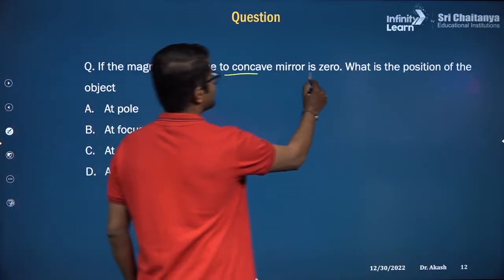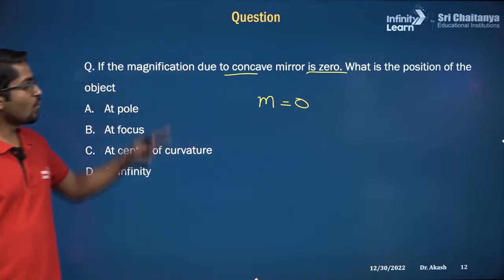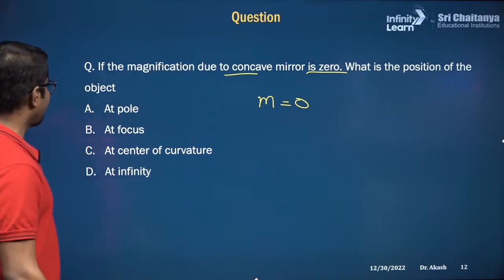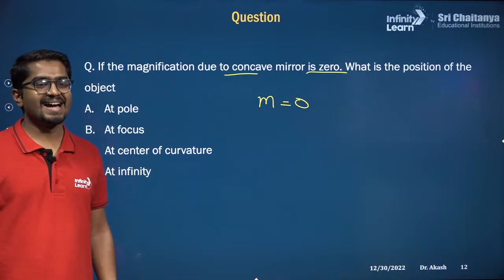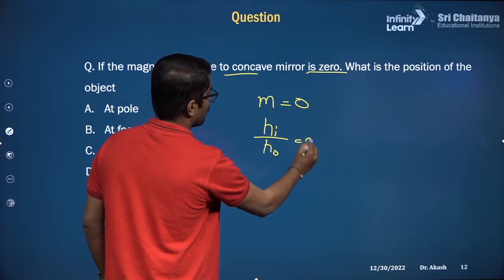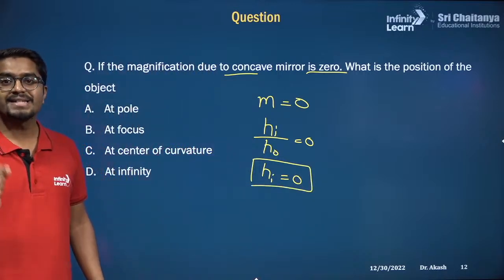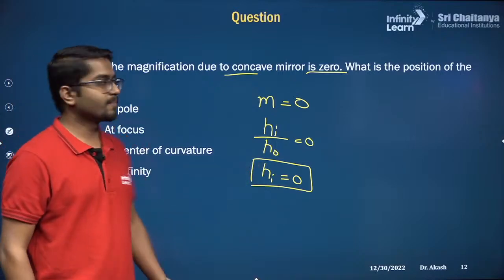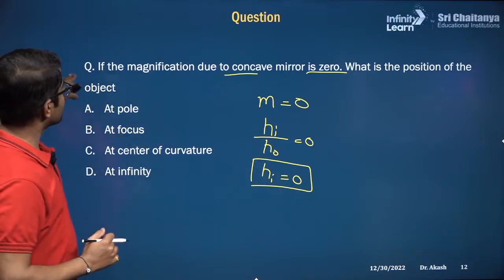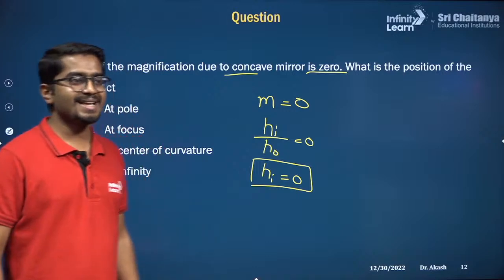Next: magnification due to a concave mirror is 0. When does this happen? If magnification equals height of image divided by height of object is 0, that means the height of the image is 0 — it is a point-sized image. The image forms at the focus, so the object must be placed at infinity. Only then will you get a point-sized image.